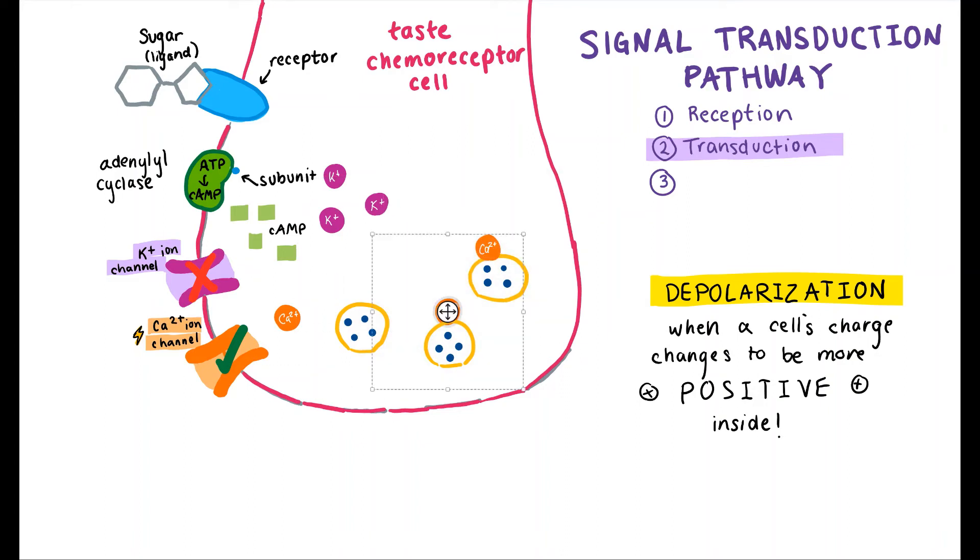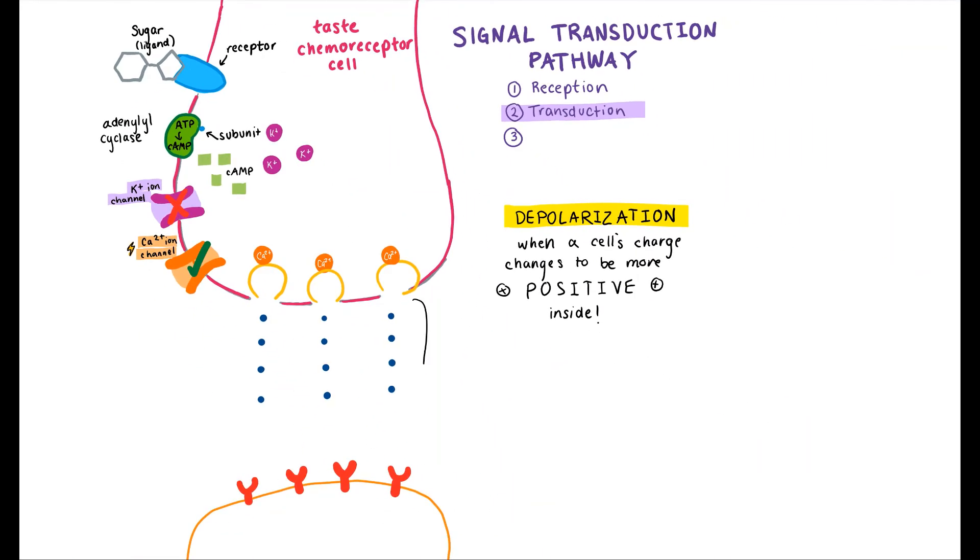They are brought to the cell membrane and released across the synapse between the taste cell and a nearby nerve cell. The neurotransmitters then bind to a receptor on the gustatory nerve cell before the final step.